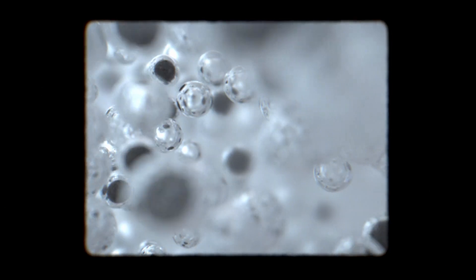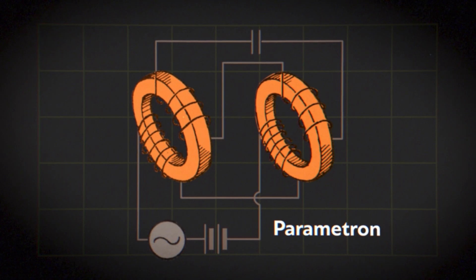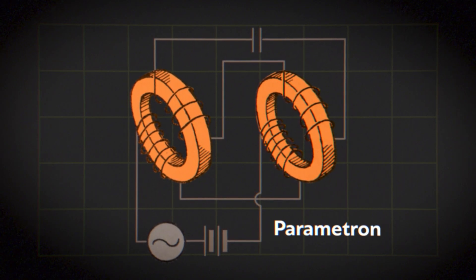Thus, it functions akin to an electronic circuit element called a parametron, which is a good analogy for the simplest form of agency in nature.